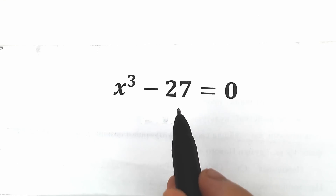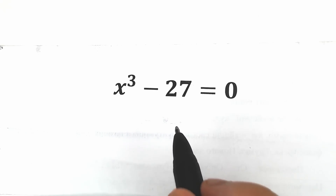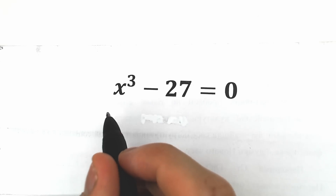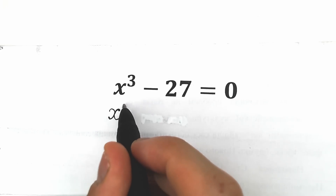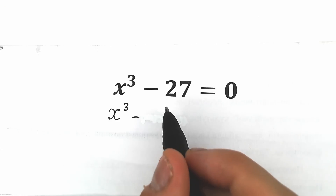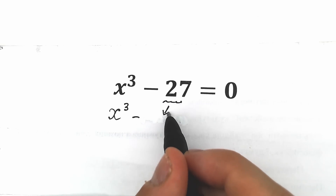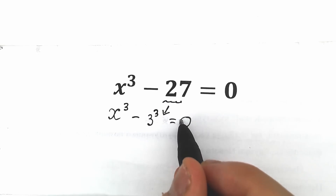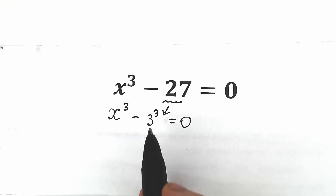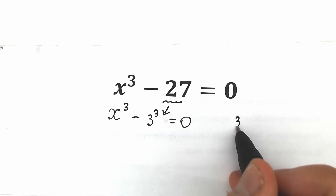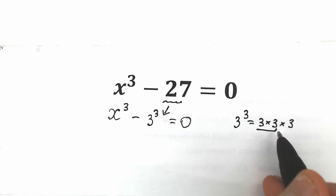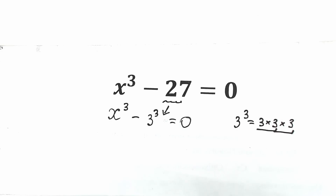So x cubed minus 27 equals 0. This 27 can be written as 3 cubed. So we have x cubed minus 3 cubed equals 0. This is great because 3 to the power 3 equals 3 times 3 times 3, which equals 9 times 3, which is 27.